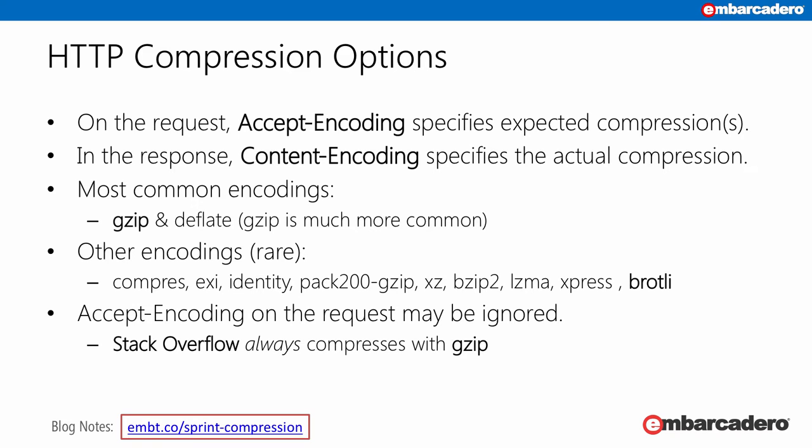HTTP compression is called encoding. You specify on your request the accept-encoding header, and in the response it says content-encoding, telling you what format was used. You tell the server which encodings you'll accept, and the server tells you which one you get. Usually it respects that, but sometimes you might say you'll accept GZIP and deflate, and it gives you nothing. Other times, Stack Overflow for example always gives you GZIP back. The two most common are GZIP and deflate — you can say 'accept-encoding: gzip, deflate' and it will give you one of those two, which will usually be GZIP.